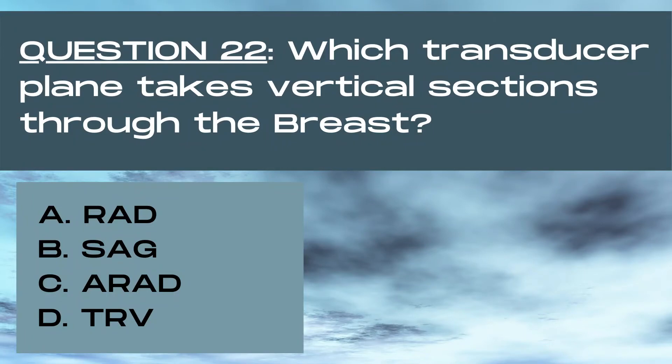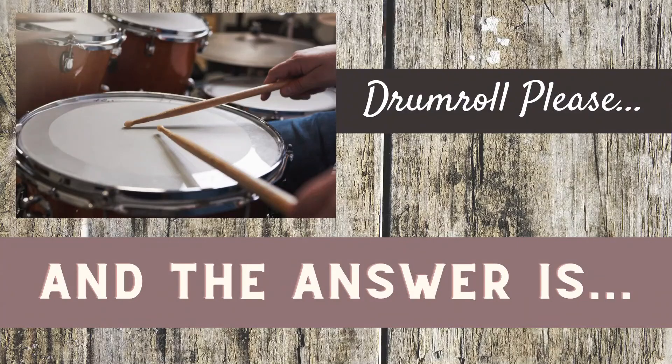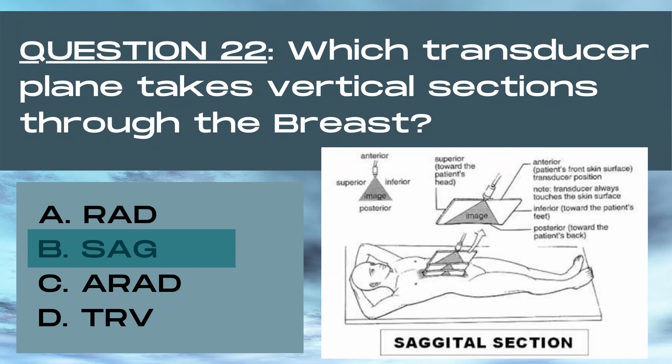Question 22. Which transducer plane takes vertical sections through the breast? A radial, B sagittal, C antiradial, or D transverse? The answer is B, sagittal. The sagittal plane takes vertical sections through the breast or through the body on ultrasound. It's also known as the longitudinal scanning plane.